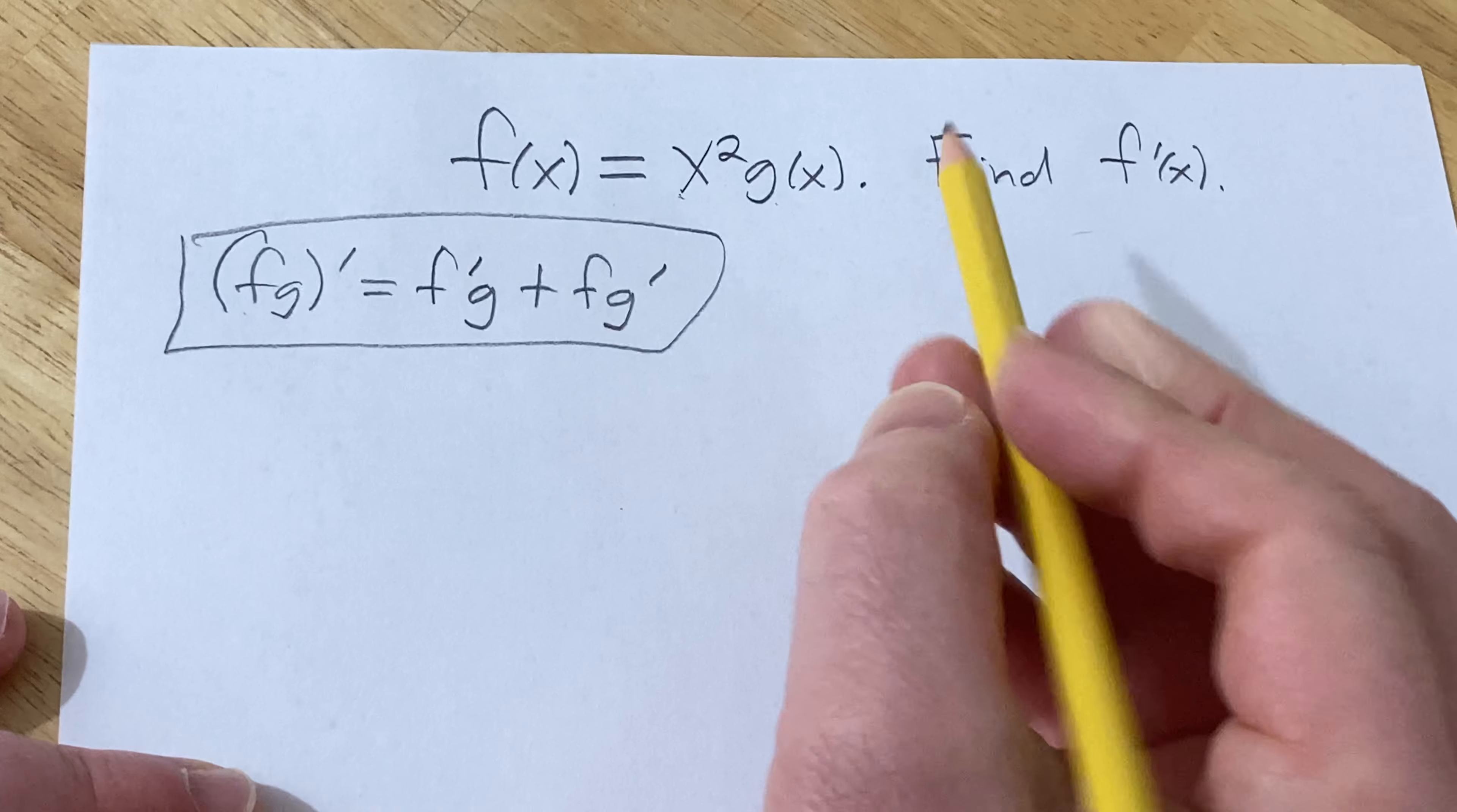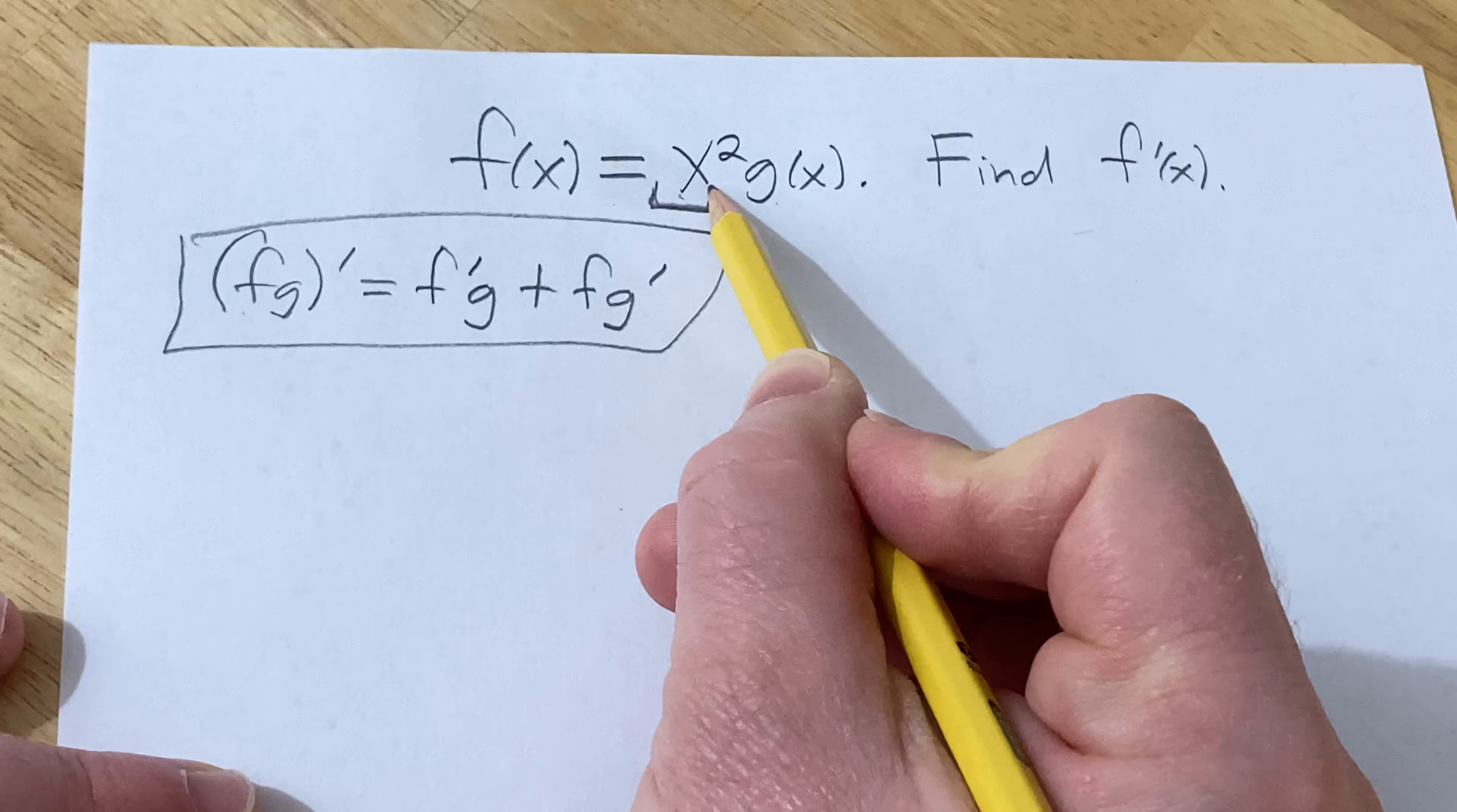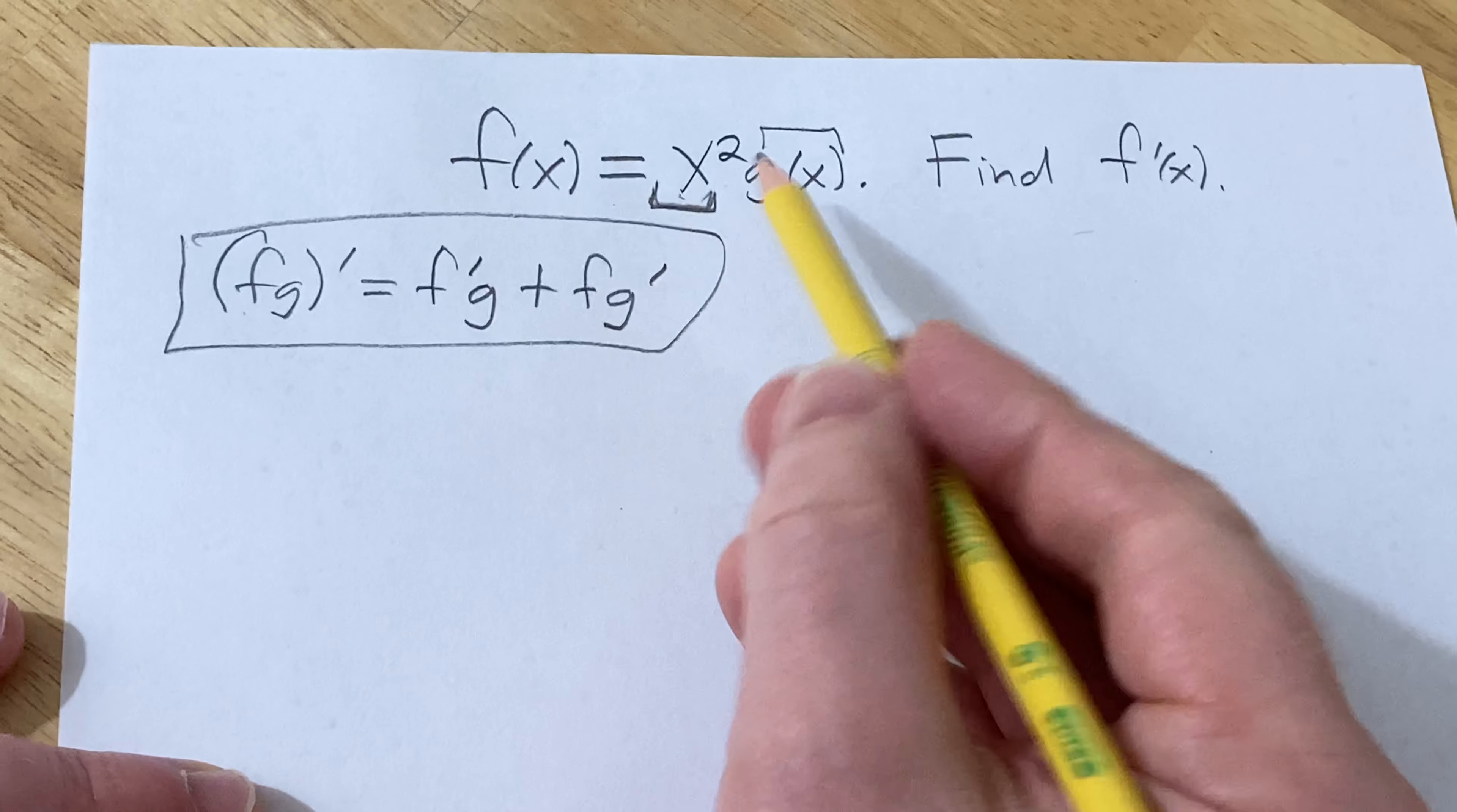This is called the product rule. And so in our case here this is our first function and then this is our second function. Okay so let's do it.